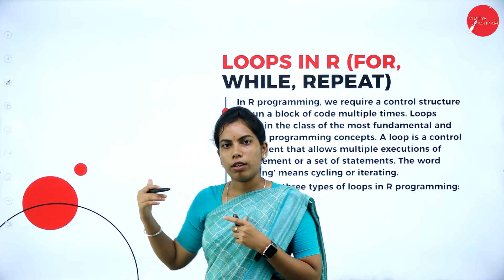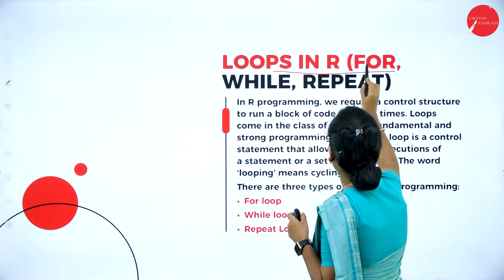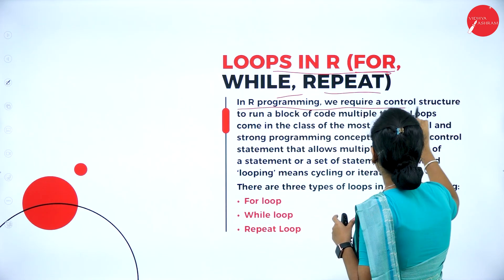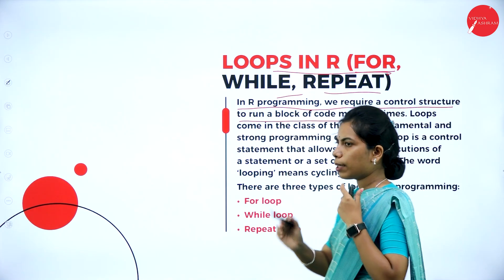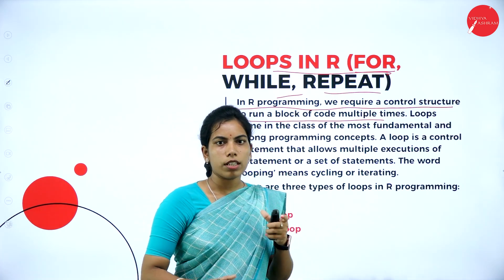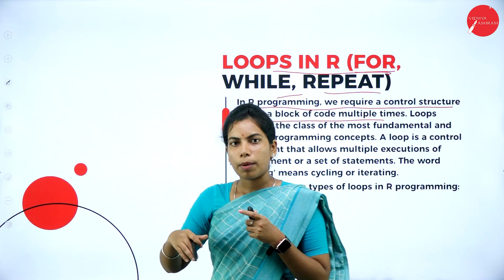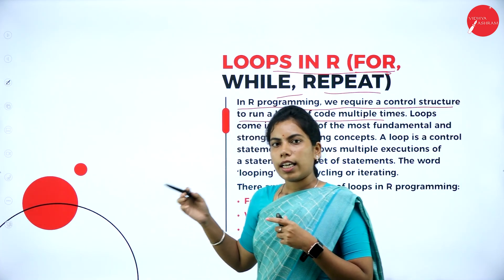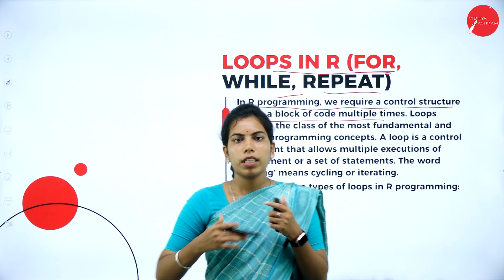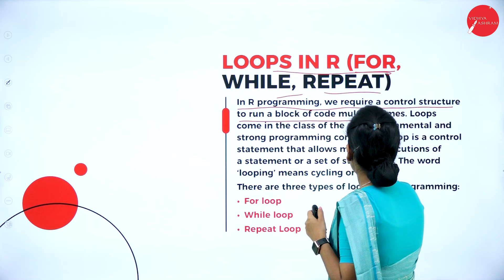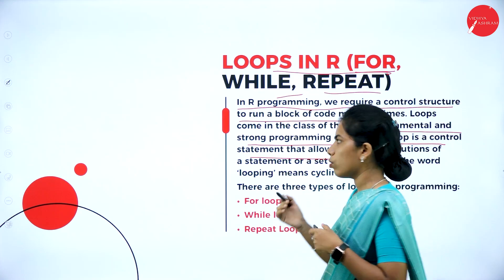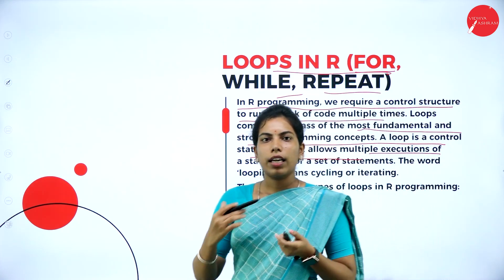Loops are sequences of repeating statements. In R, the main loops are: for loop, while loop, and repeat loop. R programming requires control structures to run a block of code multiple times. For instance, to print numbers up to 10 sequentially, we use a for, while, or repeat loop. A loop is a fundamental programming construct that allows multiple execution of any statement.